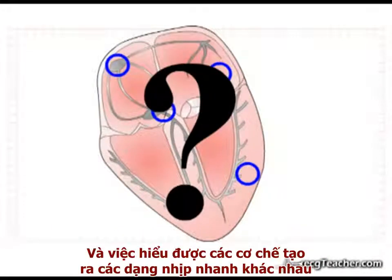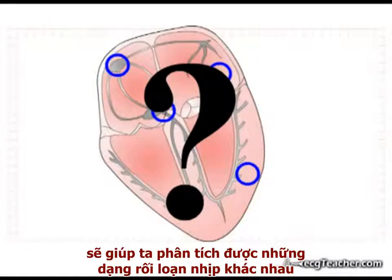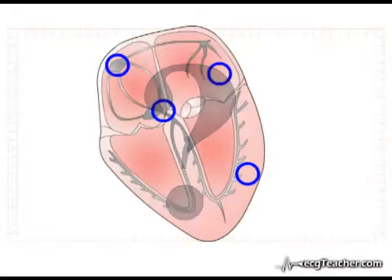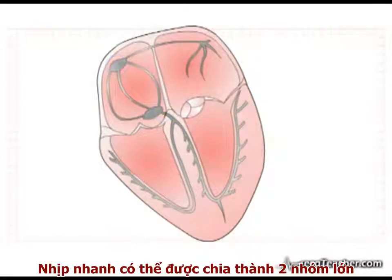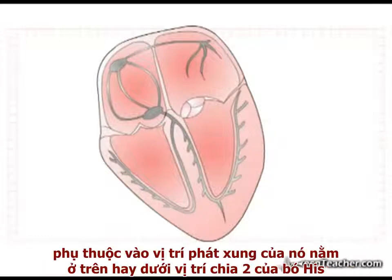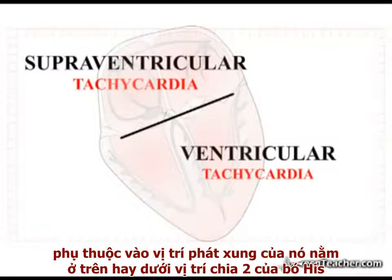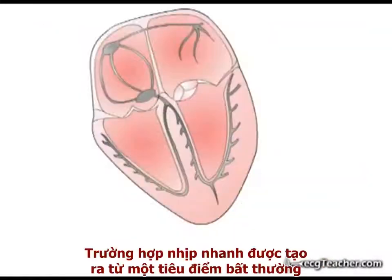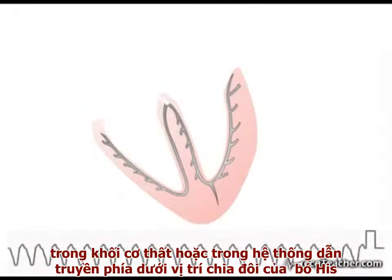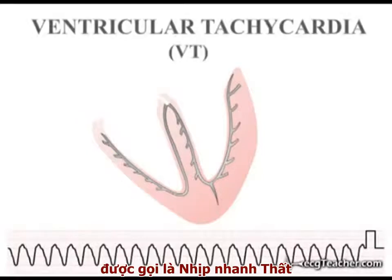An understanding of the mechanism generating different tachycardias will come with analysis of the individual types. Tachyarrhythmias may be divided into two major groups depending on whether their focus of origin is situated above or below the bifurcation of the bundle of His. A tachycardia arising from an abnormal focus in the ventricular muscle mass or in the conducting system below the bifurcation of the bundle of His is termed a ventricular tachycardia.